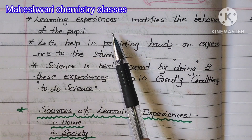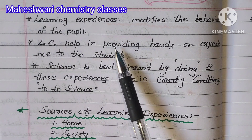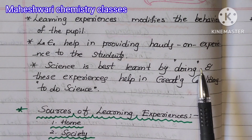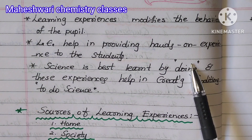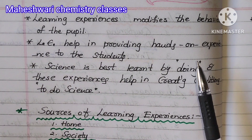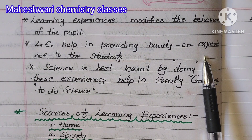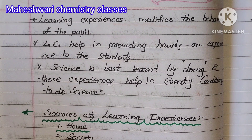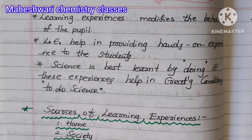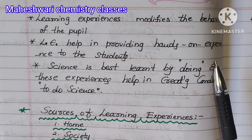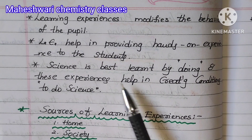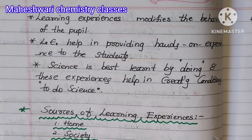Learning experiences help in providing hands-on experience to the students. For example, in the lab we look at a strip, a liquid, an acid base, and indicators, and observe colour changes. These experiences help in creating a conditioning to do science.